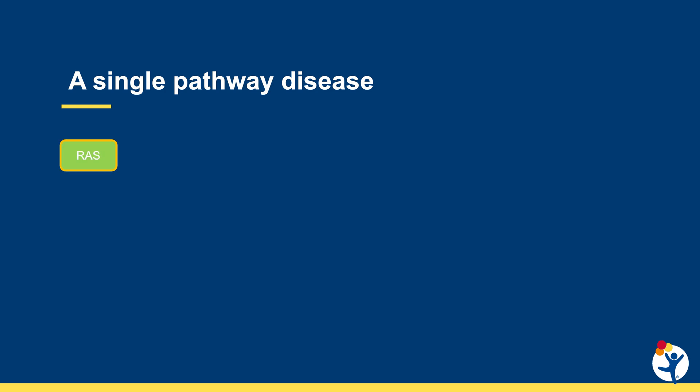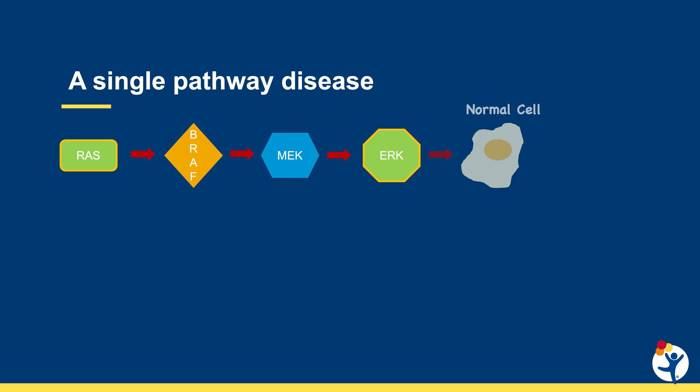There's a protein called RAS, and this is what we think of as a master regulator protein. This protein sends signals down to other proteins to tell them to grow. The next signal in this pathway goes from RAS to BRAF, then it sends a controlled signal down to something called MEK, which goes down to something called ERK. All of these proteins working down this pathway in a nice orderly fashion, controlled by RAS, create a normal cell and cause it to grow.